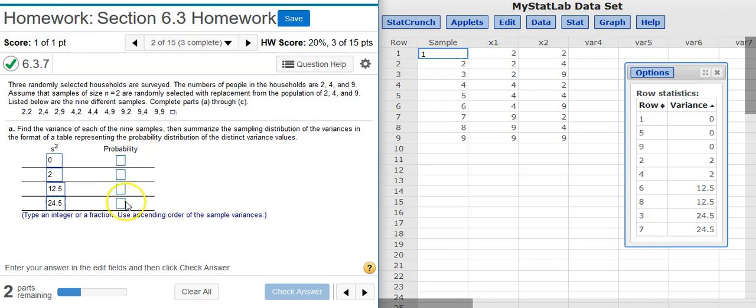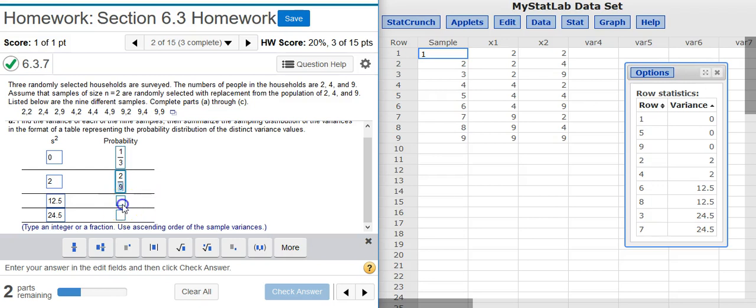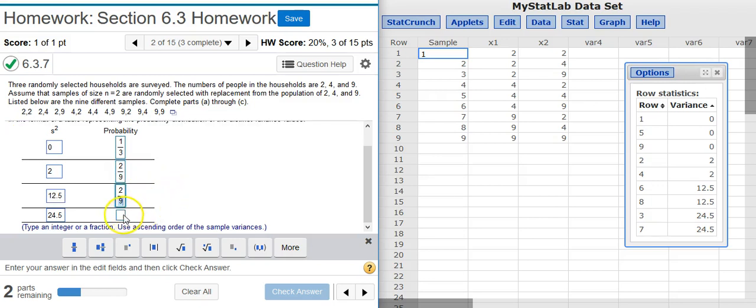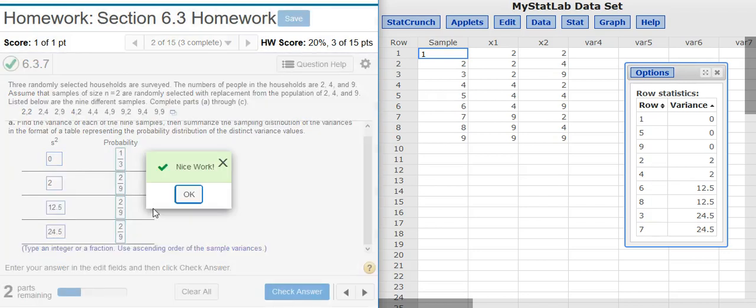Now to get the probabilities for each of those variance values, again look at my table. Remember probability is the part over the whole. So what's the part that is 0? Well how many zeros do I have? I've got 3 zeros out of 9 values total, so there's 9 samples total, so that's the whole. So 3 over 9 is my probability. But 3 over 9 reduces to 1 third, so that's what I'm going to put in my answer field. Next, how many 2's do we have in our table? Well we've got 2 number 2's in the table out of 9 total, so that's 2 over 9. And the same thing with 12.5, and I've got the same thing with 24.5. Nice work.